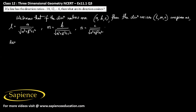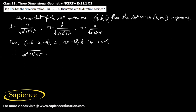Here the direction ratios are minus 18, 12, and minus 4, so a = -18, b = 12, and c = -4. Therefore we can find the value of square root of (a² + b² + c²), which is square root of (18² + 12² + 4²) = square root of (324 + 144 + 16).